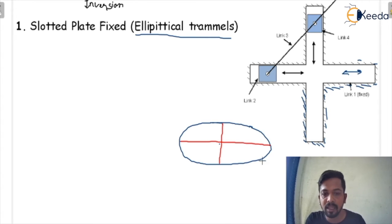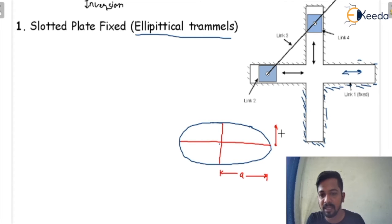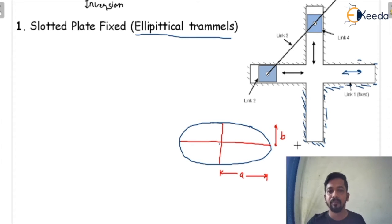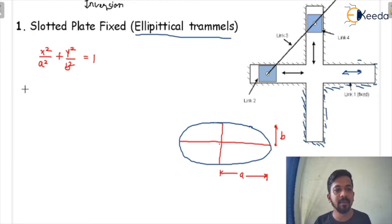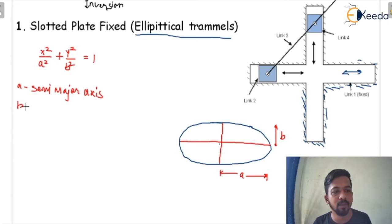If I denote this as the major axis, then this would be the semi-major axis, which I am denoting with small 'a'. This is the semi-major axis. And this would be the semi-minor axis, denoted as small 'b'. The equation of the ellipse is: x² upon a² plus y² upon b² equals 1. Here, 'a' is the semi-major axis and 'b' is the semi-minor axis.